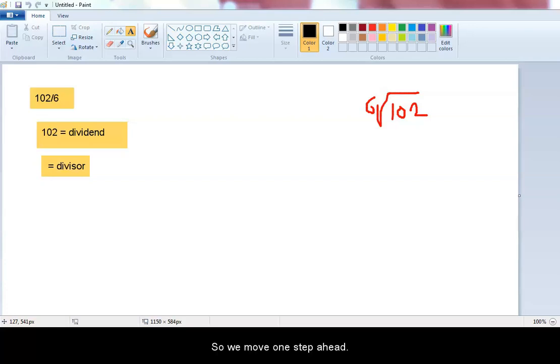So we move one step ahead. There is a 0 in front of 1. Putting them together we have 10. So 6 goes into 10. How many times?